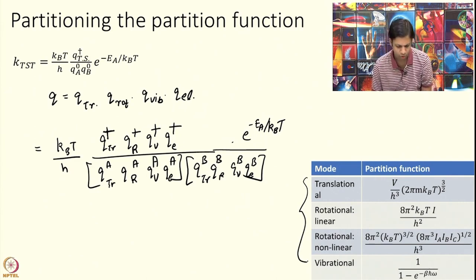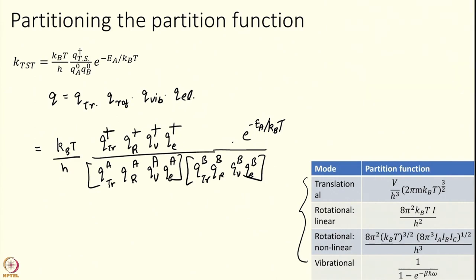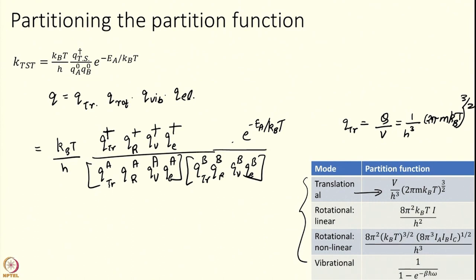Remember to divide by volume — the volume division is absorbed into the translational part. Q_translational is taken as Q/V = (1/h³)(2πmk_BT)^(3/2). So the volume is absorbed in the translational partition function, and all the q°'s here are the full partition function divided by volume.